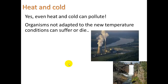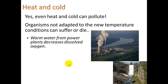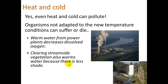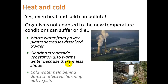Heat and cold is another type of water pollution. Organisms that are not adapted to new temperature conditions can suffer or die. Warm water from power plants decreases dissolved oxygen — as water gets warmer, molecules move faster and kick oxygen out into the air, so less remains dissolved. Also, clearing stream-side vegetation produces warm water because there's less shade. Even cold water held behind dams — when it's released, it harms native fish downstream that aren't used to the cold water shock, because behind the dam you have a huge body of water with a lot of thermal inertia, so it generally stays cooler.